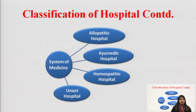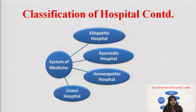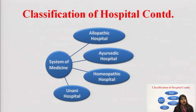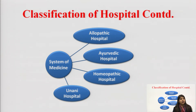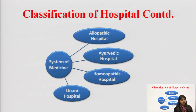Based on the system of medicine, we can classify hospitals as allopathic, ayurvedic, homeopathic, and Yunani hospitals. These are all the indigenous systems of medicine which India has. A hospital which follows and only gives ayurvedic medication is called an ayurvedic hospital; similarly for homeopathic, Yunani, and allopathic hospitals.